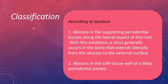Periodontal abscess has been classified according to various conditions. According to location, there are two types: first, the abscess in the supporting periodontal tissues along the lateral aspect of the root — with this condition, a sinus generally occurs in the bone extending laterally from the abscess to the external surface. Second, the abscess in the soft tissue wall of a deep periodontal pocket.